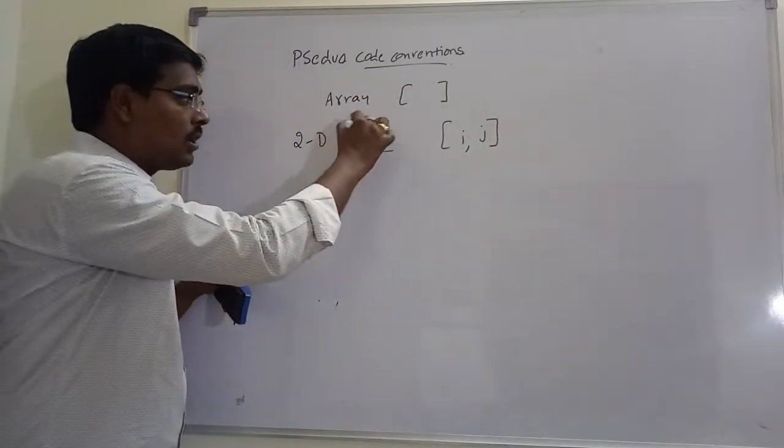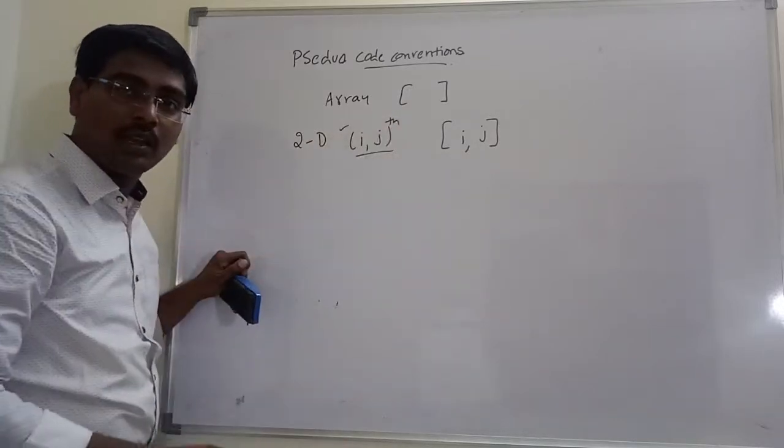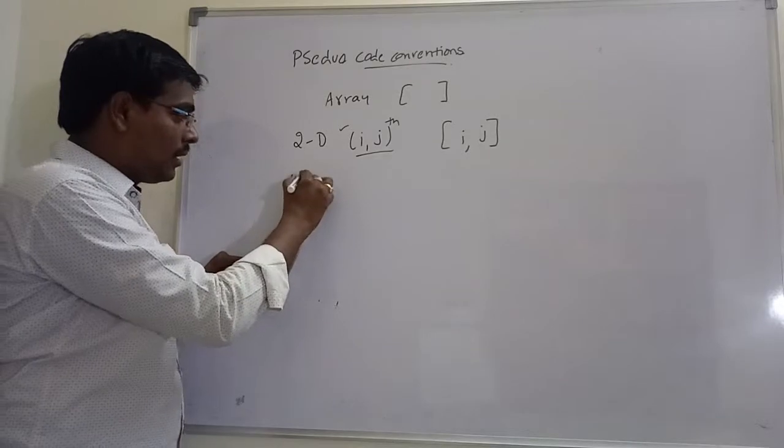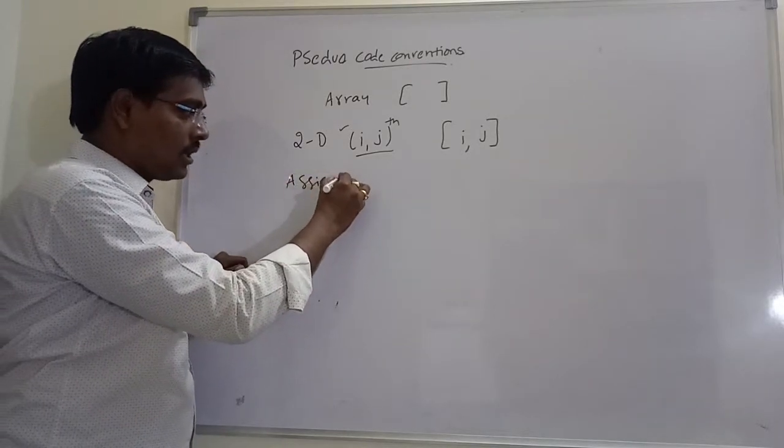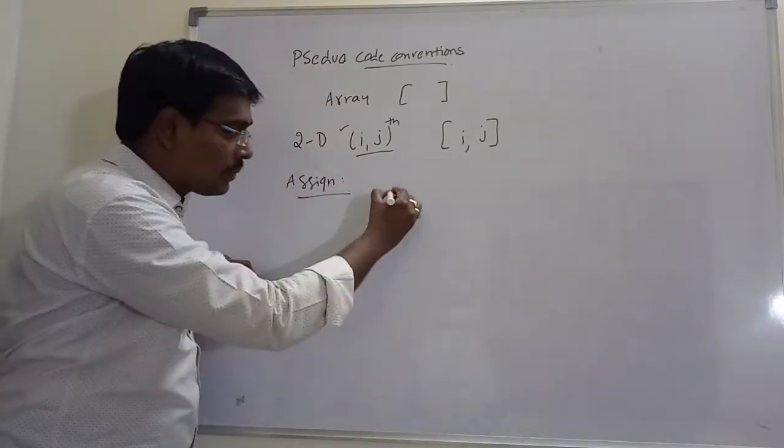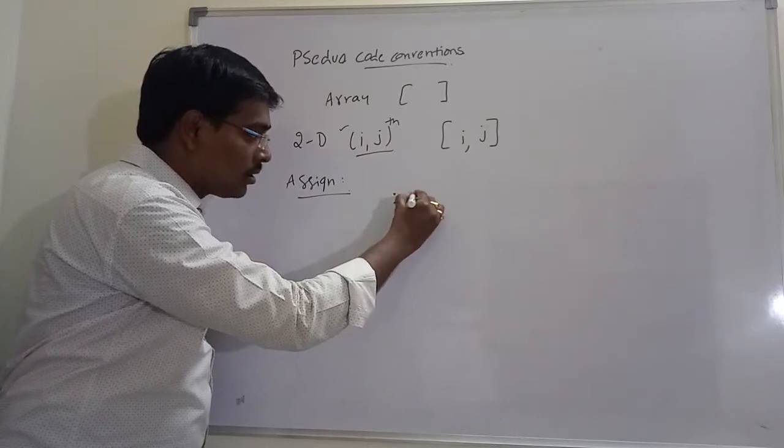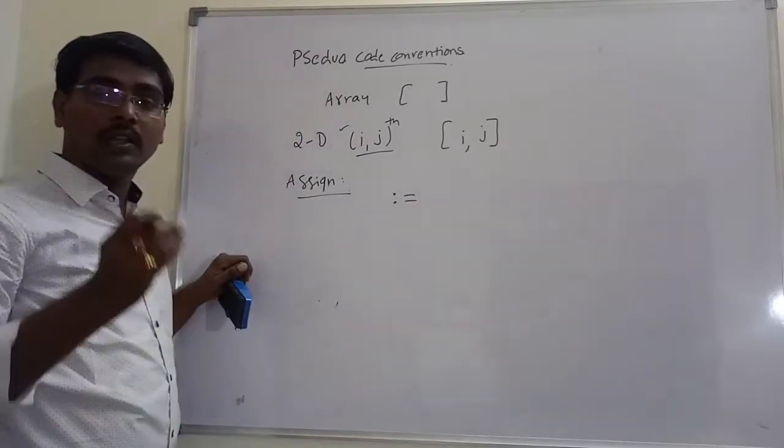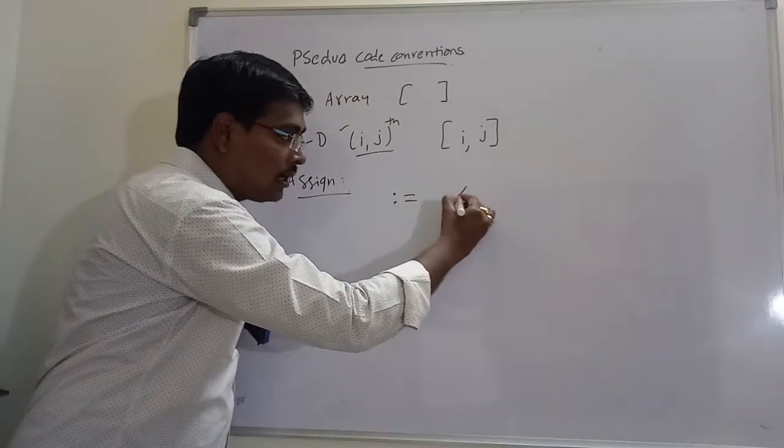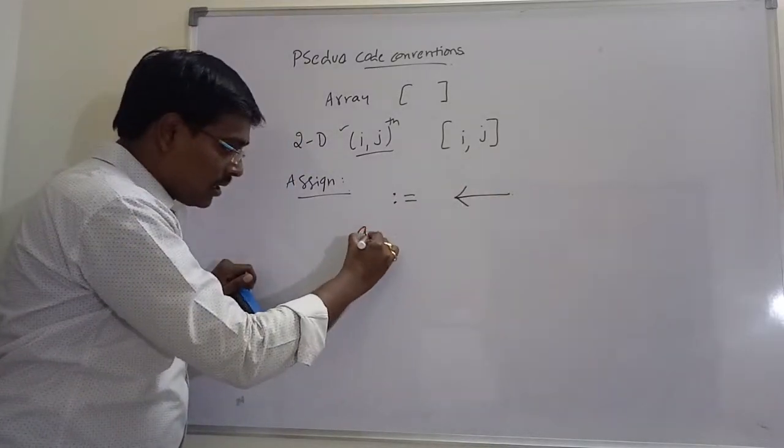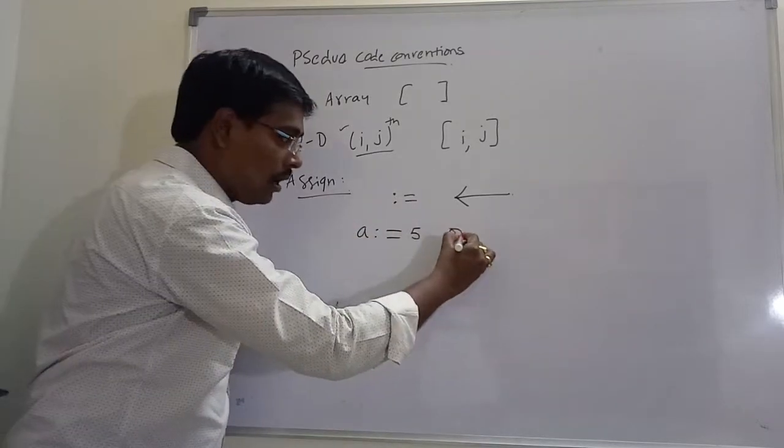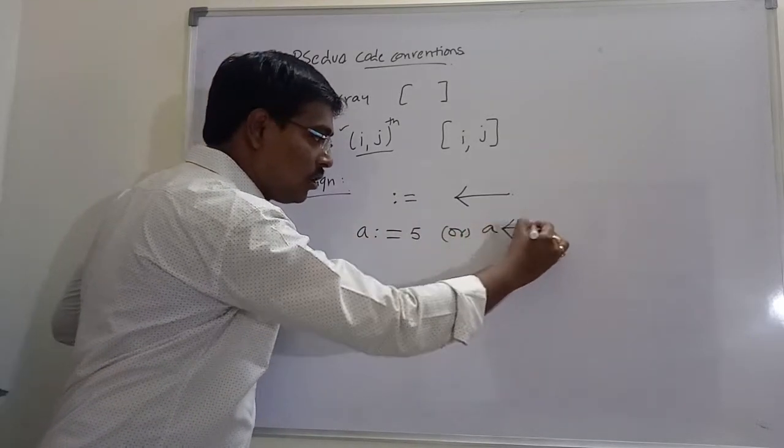Suppose one-dimensional array. For example, if you want to represent two-dimensional array for position i comma j, it is represented as A[i,j]. In programming, the position ith and jth position is represented as A[i][j], here and